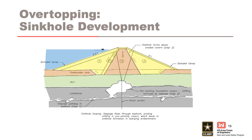Overtopping can also occur due to sinkhole development. Internal migration of embankment and/or foundation materials into open defects leads to stoping and development of a sinkhole or depression in the crest that drops below the water level. An open rock defect is illustrated in this figure, but open defects can also occur with embedded structures such as conduits, pipes, or culverts. Where the sinkhole develops is critical along with the water level at the time of occurrence. A sinkhole at the crest large enough to lower the crest leads to overtopping. If a sinkhole develops at the downstream toe, it must lead to progressive slope instability and eventually overtopping. The event tree may need to consider the sinkhole location if it is not well defined by site characterization and foundation geology understanding. For conduits, pipes, or culverts, the location could be informed by video inspection results.